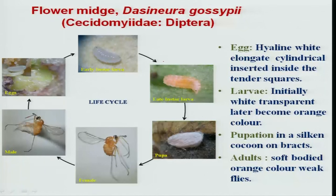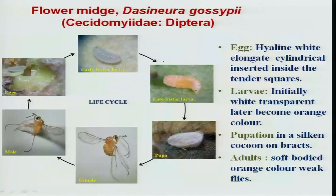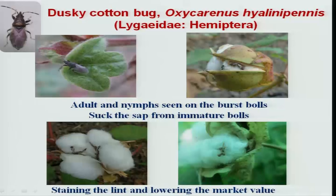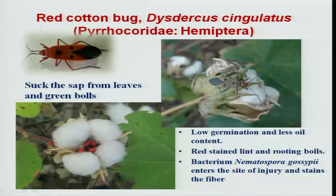Flower midge has recently occurred in some states, especially Karnataka, causing damage to squares and developing flowers by inserting eggs inside them. Ten to fifteen maggots can emerge from a single flower, destroying internal content and causing premature shedding of flowers and squares. Dusky cotton bug and red cotton bug are late-occurring pests seen on opening bolls, reducing lint quality and seed viability.